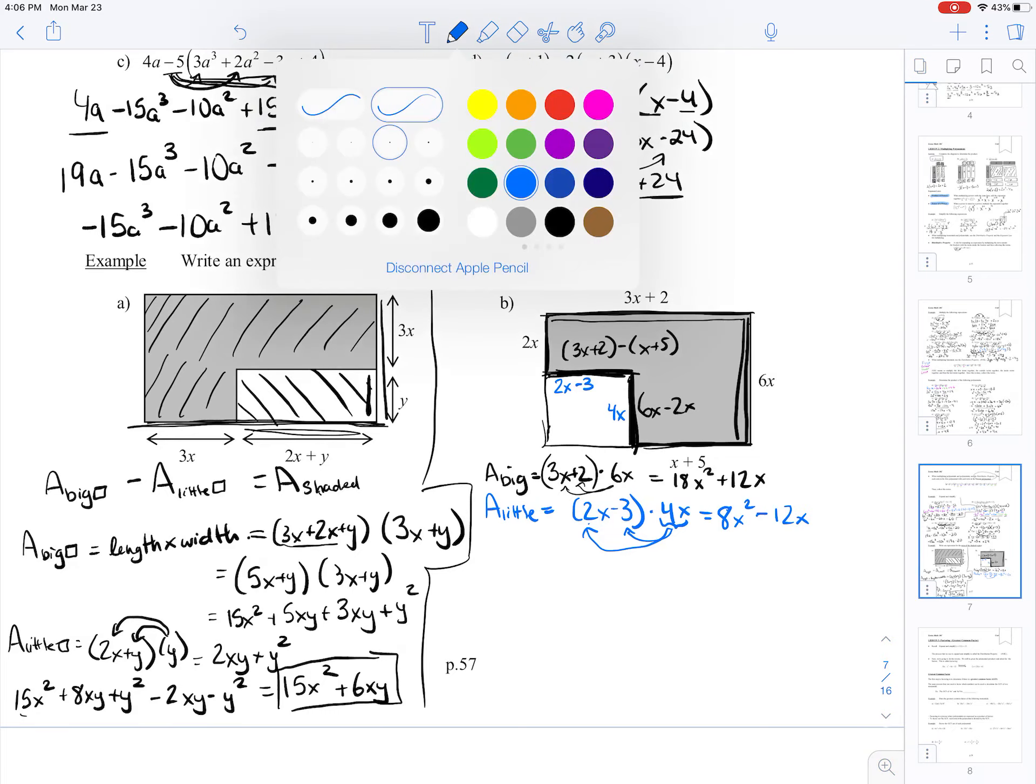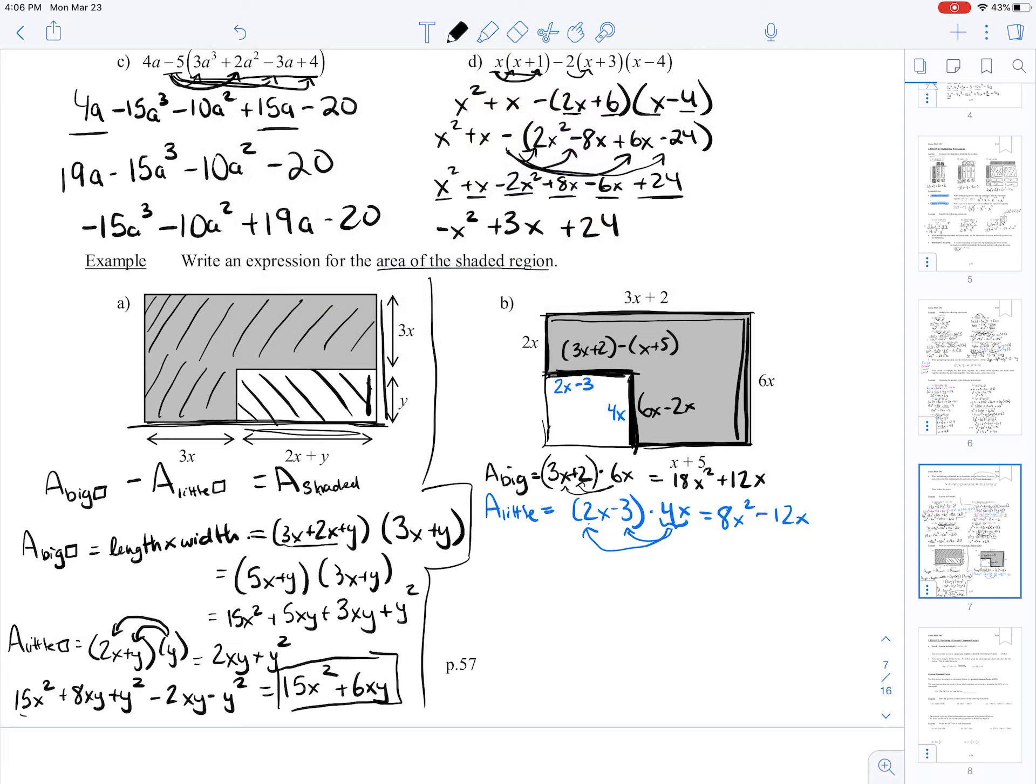All right. So now, area big minus area little is 18x squared plus 12x minus 8x squared minus 12x. Remember, I'm going to bring that negative 1 in. So this actually becomes 18x squared plus 12x minus 8x squared plus 12x. Now I'm going to combine like terms. 18x squared minus 8x squared is 10x squared. 12x plus 12x is plus 24x. So our area equals 10x squared plus 24x.